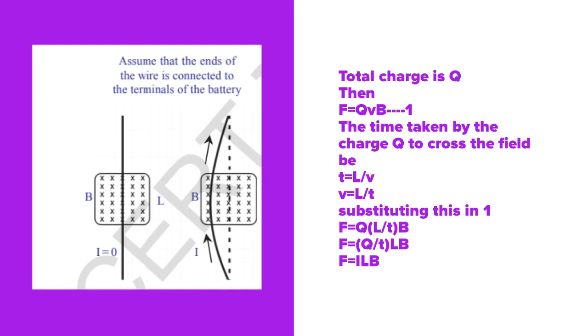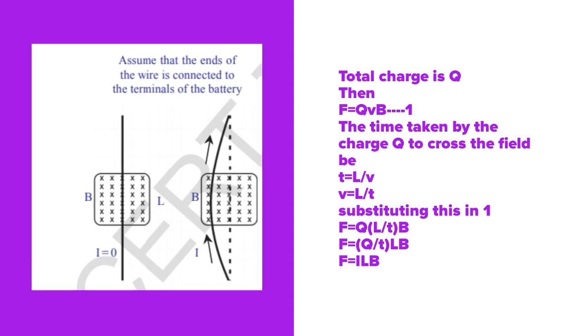L is taken as distance—the part which is kept in the magnetic field. That is the distance or length of that wire. Here v = L/t, so the equation t = L/v is converted as v = L/t.